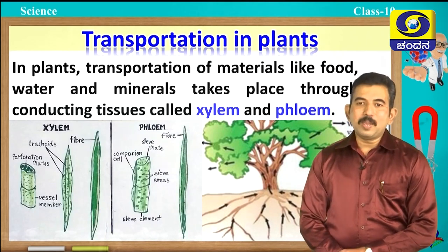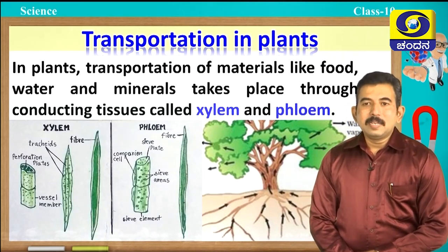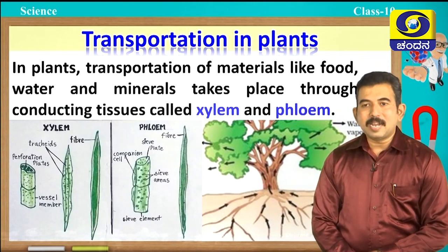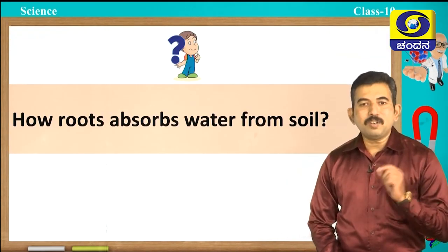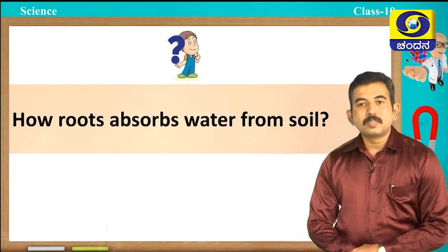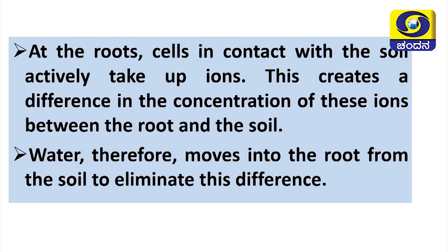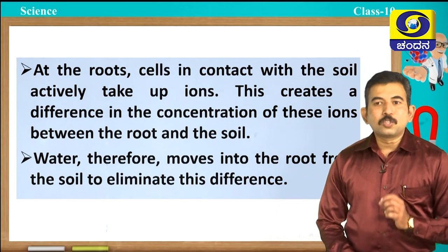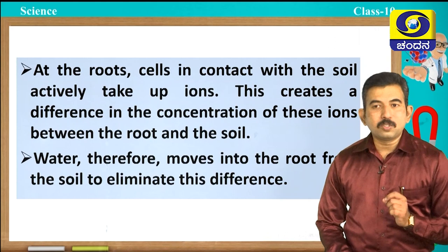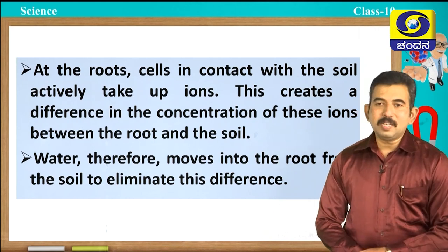Remember, xylem and phloem are the main conducting tissues present in plants. One question for you: how do roots absorb water from soil? At the roots, cells in contact with the soil actively take up ions. This creates a difference in concentration of these ions between the root and the soil, so water moves into the root from the soil to eliminate this difference.